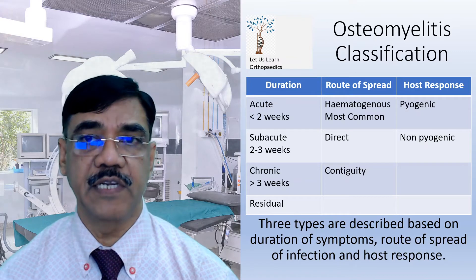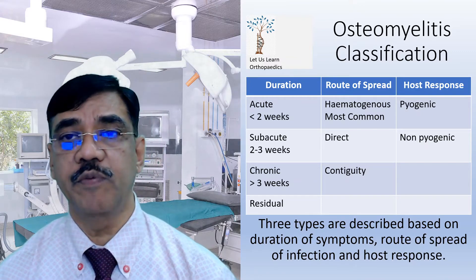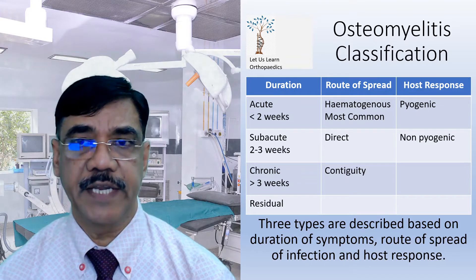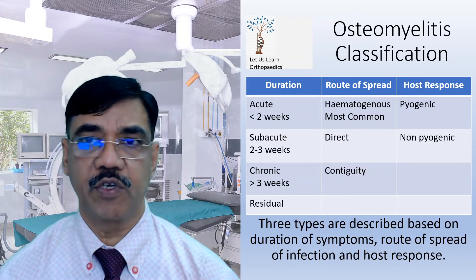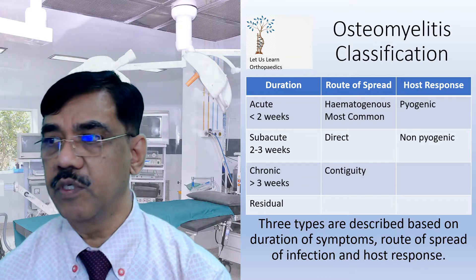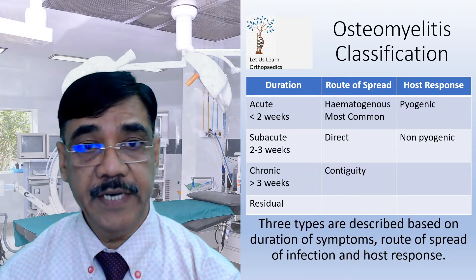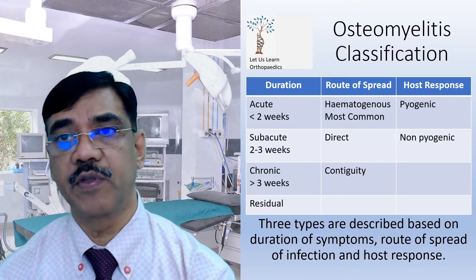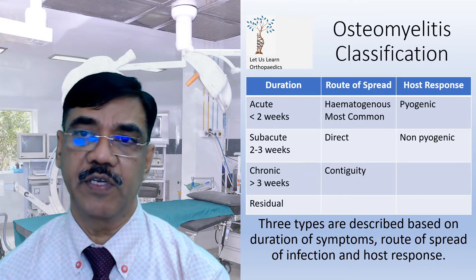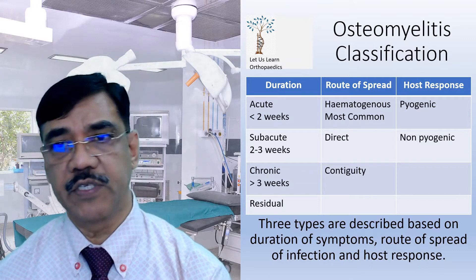And finally the residual type. Depending upon the route of spread, it could be a hematogenous route, direct route, or contiguous route. Depending upon the host response, osteomyelitis could be either pyogenic osteomyelitis or non-pyogenic osteomyelitis.